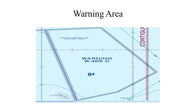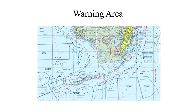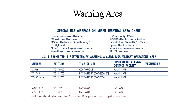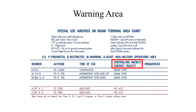Warning areas are similar in nature to restricted areas. However, the United States government does not have sole jurisdiction over the airspace. A warning area is airspace of defined dimensions extending from three nautical miles outward from the coast of the United States, containing activity that may be hazardous to non-participating aircraft. The purpose of such areas is to warn non-participating pilots of the potential danger. A warning area may be located over domestic or international waters or both, and the airspace is designated with a W followed by a number.